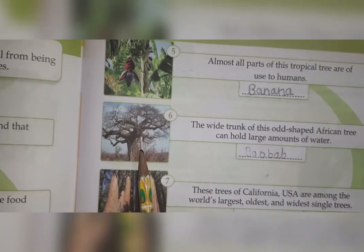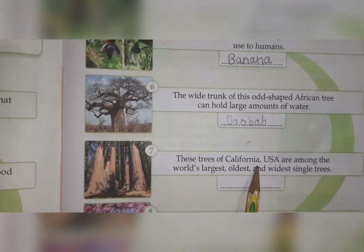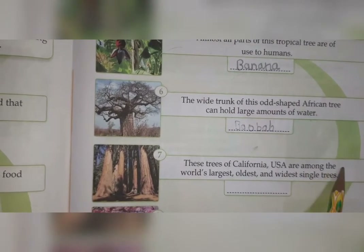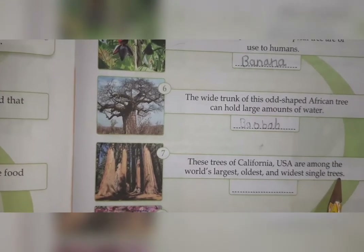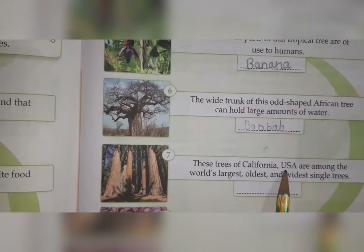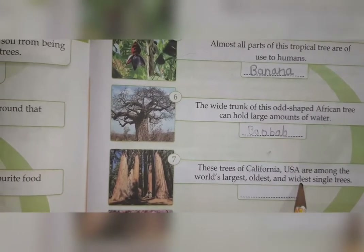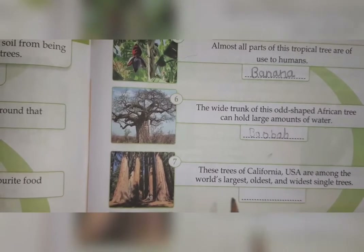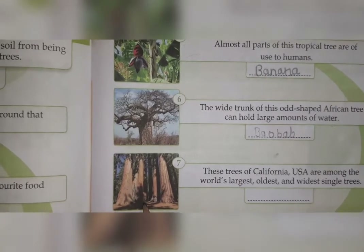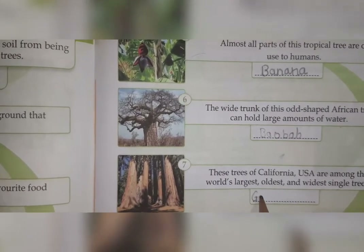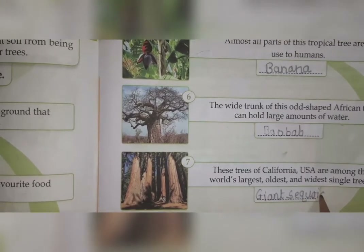Next: 'These trees of California, USA are among the largest, oldest, and widest single trees.' This tree is from California, United States of America. It is the widest because you cannot hold this trunk in your arms — that's how wide it is. The tree's name is giant sequoia — G-I-A-N-T S-E-Q-U-O-I-A.